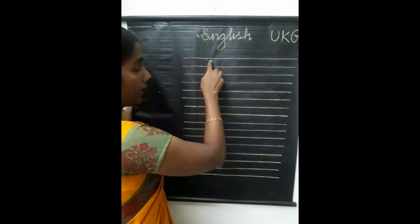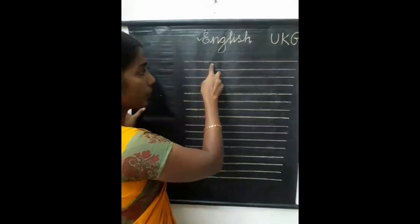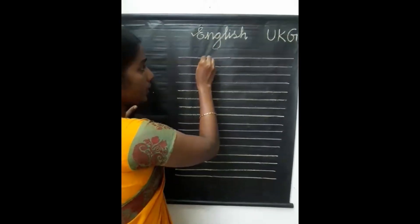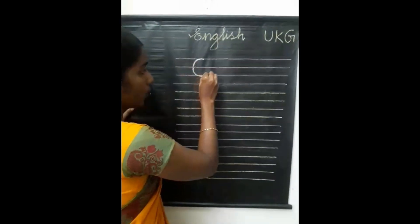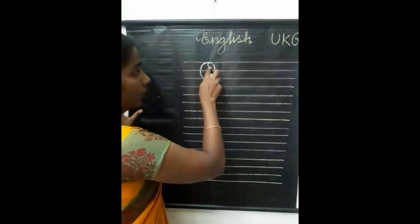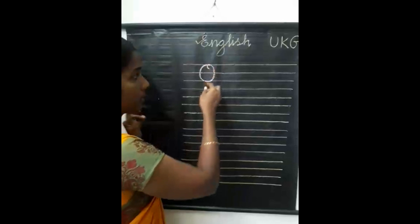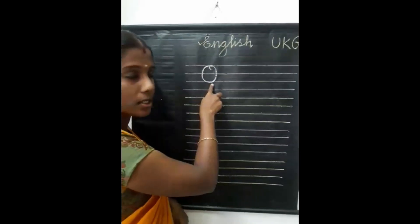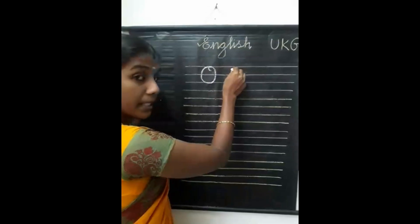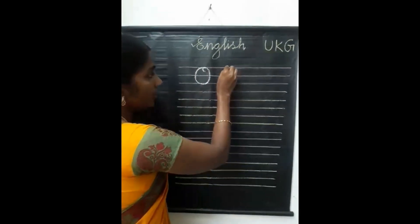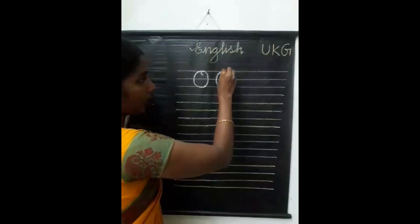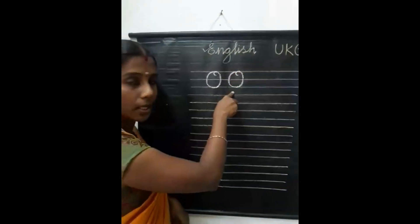For writing capital O, you should use the first three lines. First you write one circle, then like this you write. Now we got capital letter O. It's easy — write one circle, then write like this. Capital letter O.